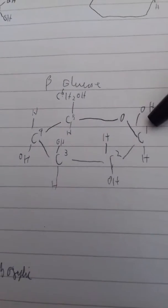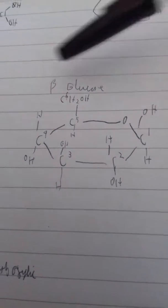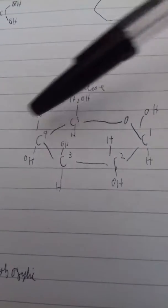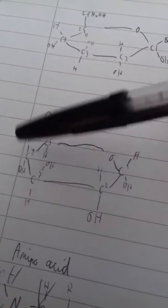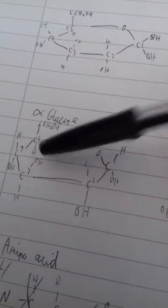The way I like to remember it is that beta glucose follows a nice pattern of up and down. In alpha glucose, the pattern of the alcohol groups goes down, up, down, down.